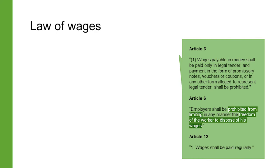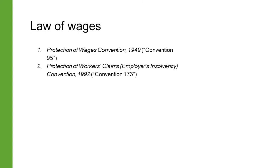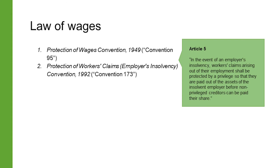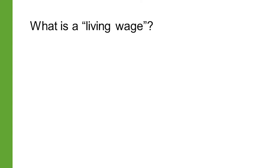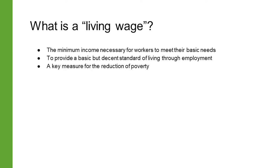Wages are to be paid in legal tender, that is money, at regular intervals, and workers must also be able to spend their wages freely. This is what the Protection of Wages Convention of 1949 requires. The Protection of Workers Claims Convention of 1992 provides for protecting workers' claims for wages in insolvency and bankruptcy proceedings, meaning that unpaid wages will be high in the hierarchy of claims against an insolvent or bankrupt employer. Several ILO conventions pursue the provision of a living wage — the minimum income necessary for workers to meet their basic needs such as food, housing, and other essential needs like clothing. The goal of a living wage is to allow a worker to afford a basic but decent standard of living through employment without government subsidies.